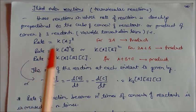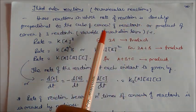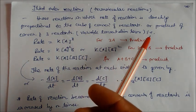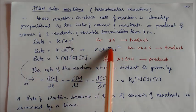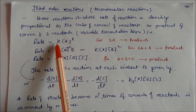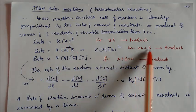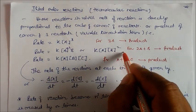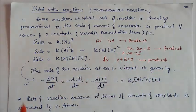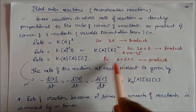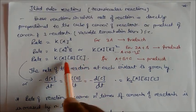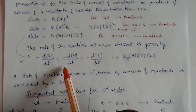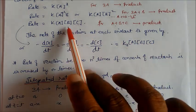Now we will see the third order reaction, also called a termolecular reaction. These are reactions in which the rate of reaction is directly proportional to the cube of the concentration of one reactant, or the product of concentrations of three reactants. For example, rate equals k[A]³ for 3A → product, or rate equals k[A]²[B] for 2A + B → product, or rate equals k[A][B]² for A + 2B → product.